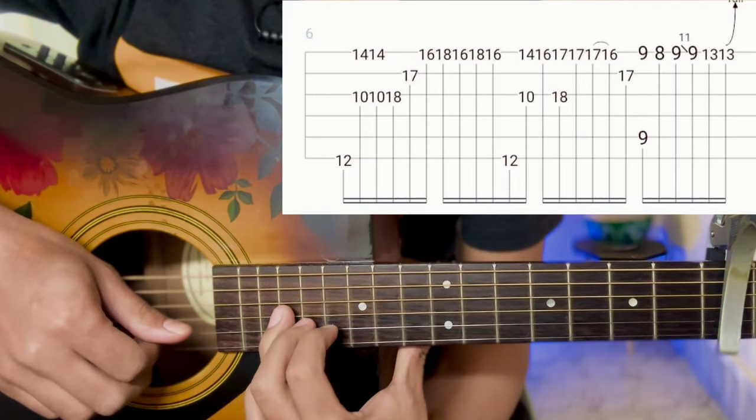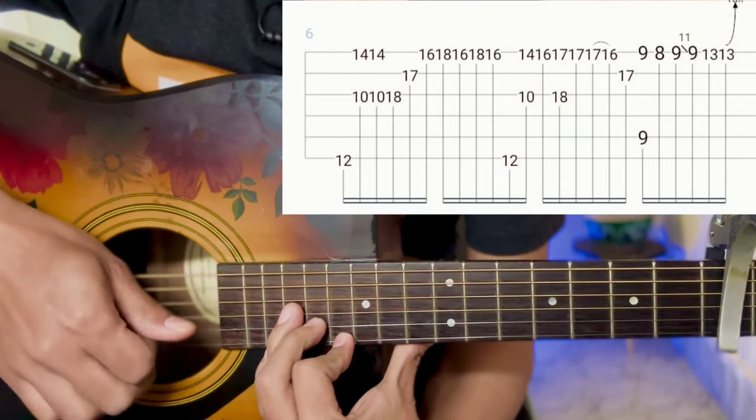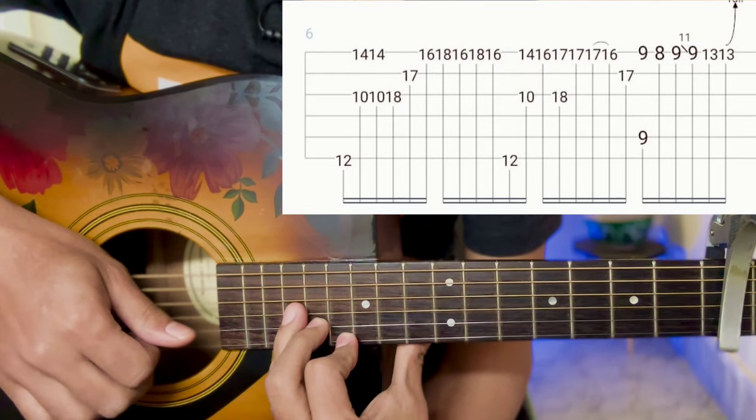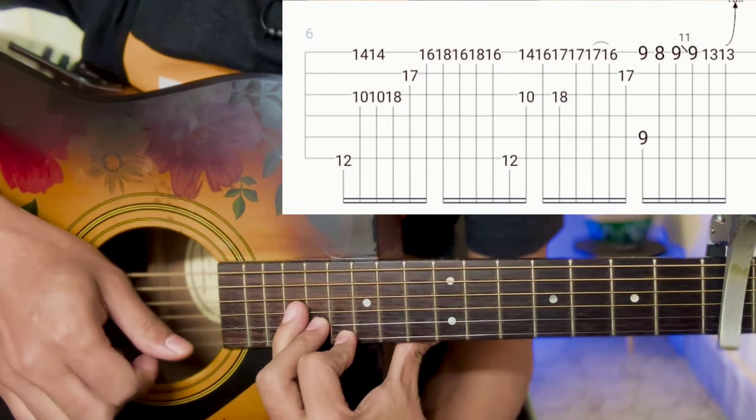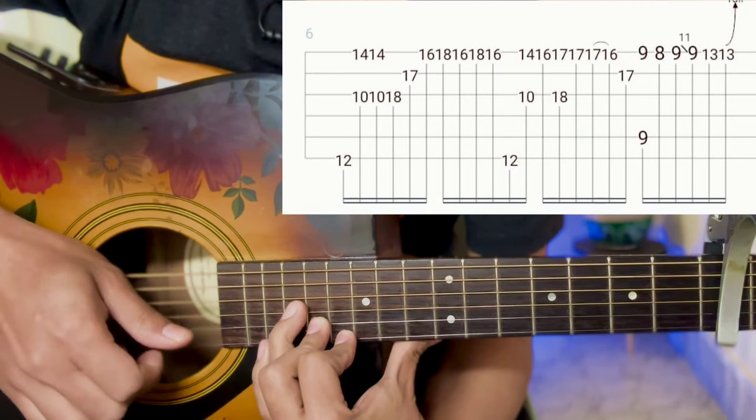Third string eighteenth, second string seventeenth, first string sixteenth, pick and do it. Three, two, one. Fourth finger, first string eighteenth, sixteenth, eighteenth sixteenth, eighteenth sixteenth. Repeat.